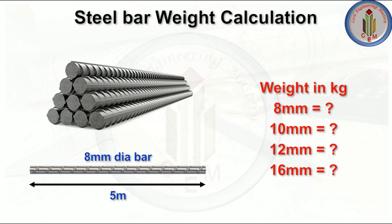We use reinforced steel bars in all structural members — for example, slab, beam, column, and foundation. Whatever the shape, we need to arrive at the quantity of steel in kilograms or tons. Material procurement is very important; if we know the correct quantity then only we can procure the correct quantity of material. For that we need to calculate the quantity of steel bar in kgs.